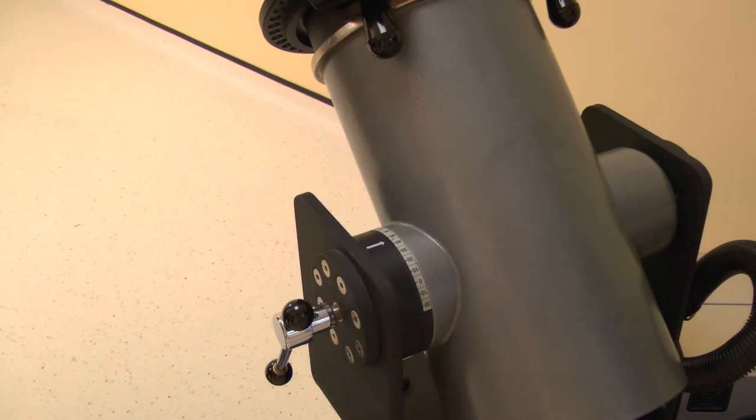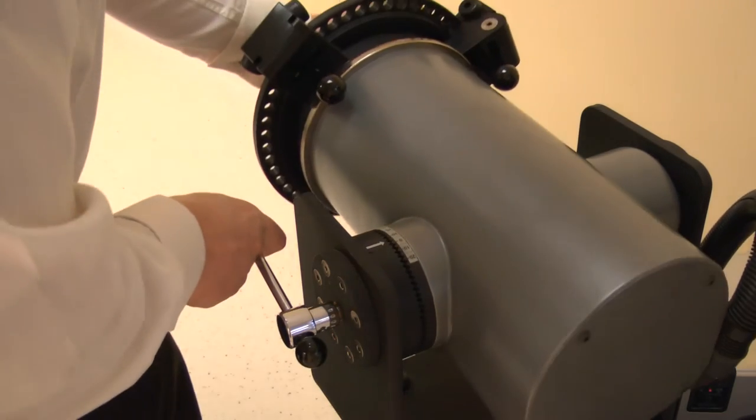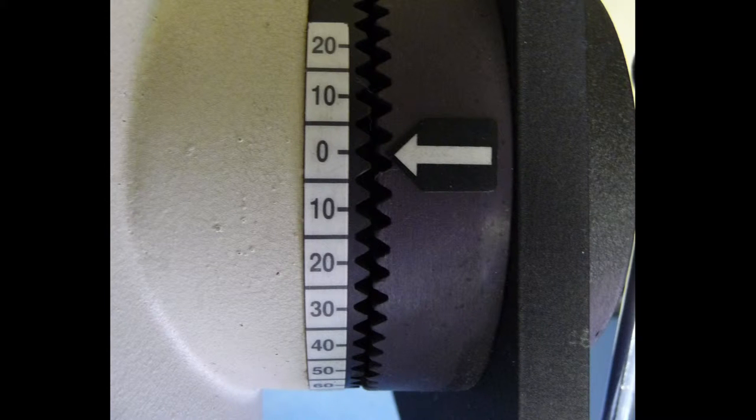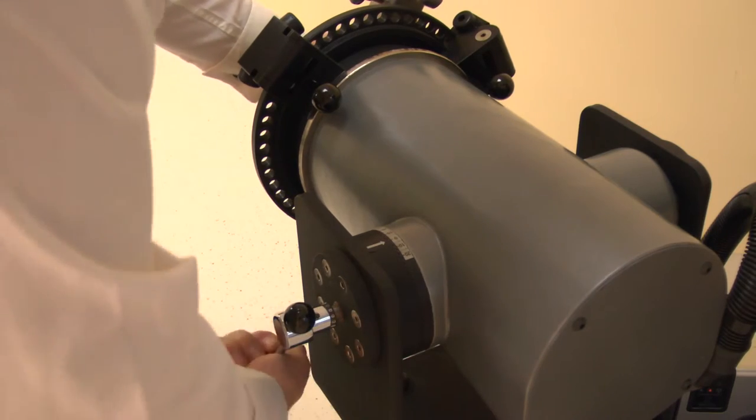Now set the dynamometer tilt. Release the locking handle then change. Adjust the tilt angle to 0 degrees. Lock by tightening the handle.